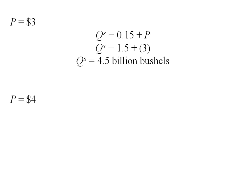What if the price were $4? Using our original supply equation, plugging in 4 for price, we get 5.5 billion bushels.